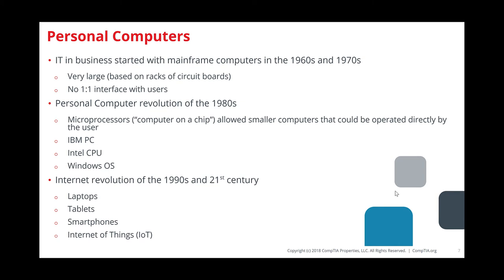They were in college at that time, part of the revolution seeing that microprocessors — a computer on a chip — could now be created. They were the pioneers that really changed things into the computers we see today. Fast forward to the 90s, that's where we saw the boom of the internet — more people getting connected, more lines being run. AOL was big. More and more things went online.